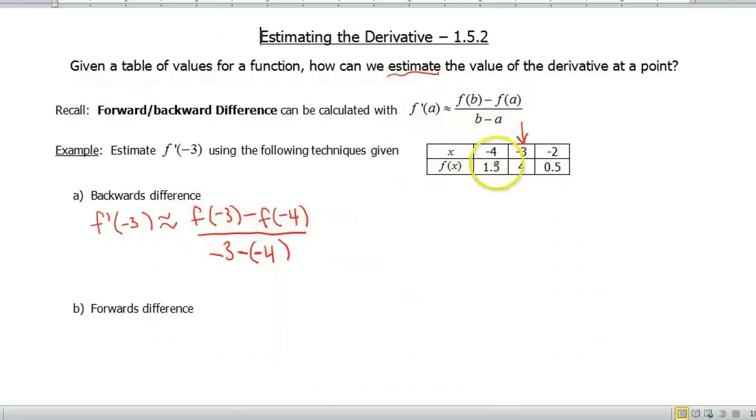f(-3) by our table is 4 minus f(-4) by our table is 1.5. Then when you do the algebra in the denominator, that ends up giving you a value of positive 1. So when you simplify that, that gives you a value of 2.5.